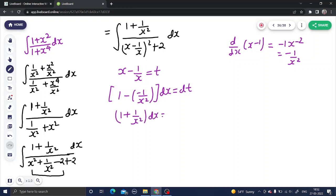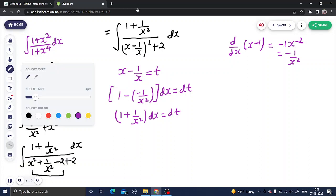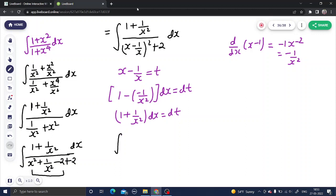dx to be equal to dt. So you can see that this is your numerator portion. So coming back to the integral, I can write this as dt in numerator. In denominator this is nothing but t² + 2, I can write as (√2)².